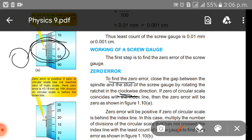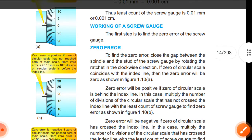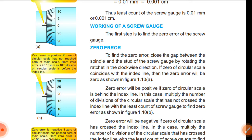If the zero error is concerned, means there is an error, such as in this figure. Zero error will be positive if the circular scale is behind the index line. And in this case, multiply the number of divisions of the circular scale that has not crossed the index line with the least count of the scale. You get to find the zero error as shown in figure 1.10b.